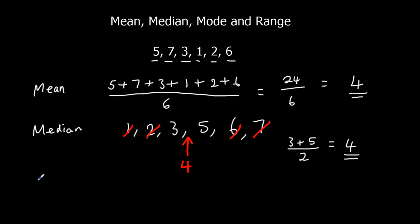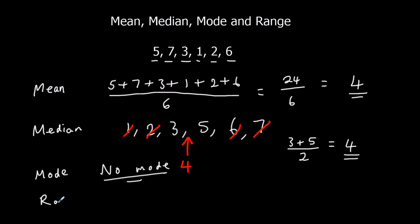The mode — the most common number. We've got 1, 2, 3, 5, 6, and 7. There's no number that occurs more than once, so there is no mode. The range: the biggest number take away the smallest number. The biggest number is 7, the smallest is 1. 7 take away 1 is 6. So the range is 6.